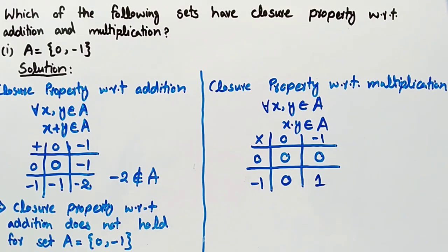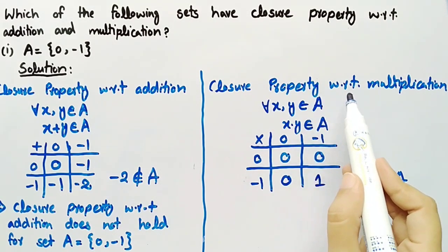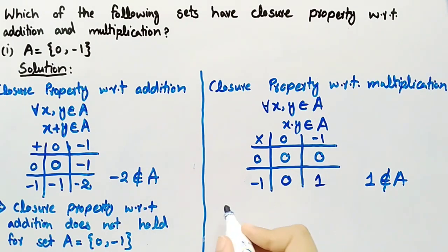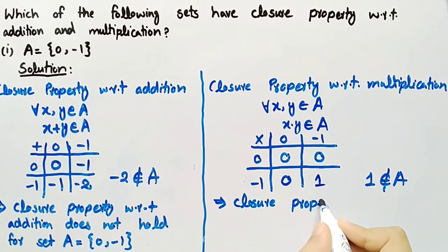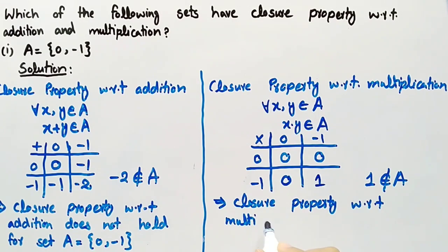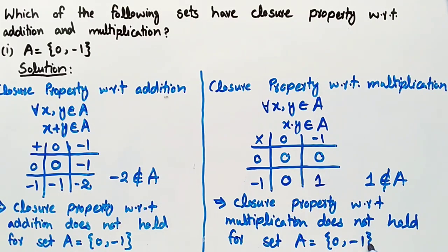From these products it can be clearly seen that 1 does not belong to set A. This means that set A does not satisfy the definition of closure property with respect to multiplication, which implies that closure property with respect to multiplication does not hold for set A = {0, -1}.